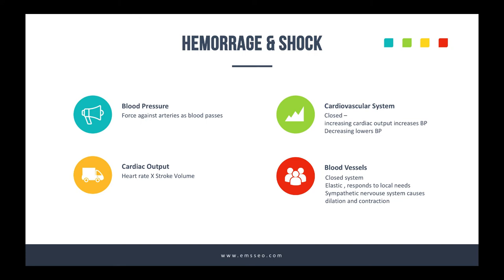The cardiovascular system is a closed system. When you increase cardiac output or vascular resistance — because of hemorrhage or shock — it often increases blood pressure, especially initially. But when cardiac output and vascular resistance start to decrease, blood pressure will drop. Blood pressure depends on these factors just as much as the entire body does to keep things going.